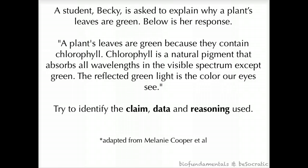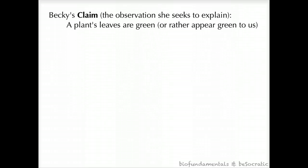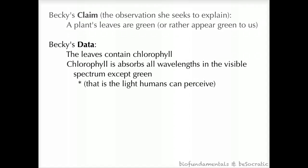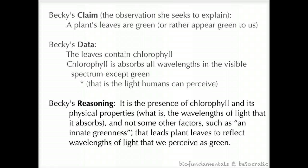Try to identify the claim, data, and reasoning used. This example is adapted from Melanie Cooper. Becky's claim — the observation she seeks to explain — is that a plant's leaves appear green to us. Becky's data is that the leaves contain chlorophyll, and that chlorophyll absorbs all wavelengths in the visible spectrum except green. Becky's reasoning is that the presence of chlorophyll and its physical properties — the wavelengths of light that it absorbs, and not some other factors such as innate greenness — are what leads the plant leaves to reflect wavelengths of light that we perceive as green.